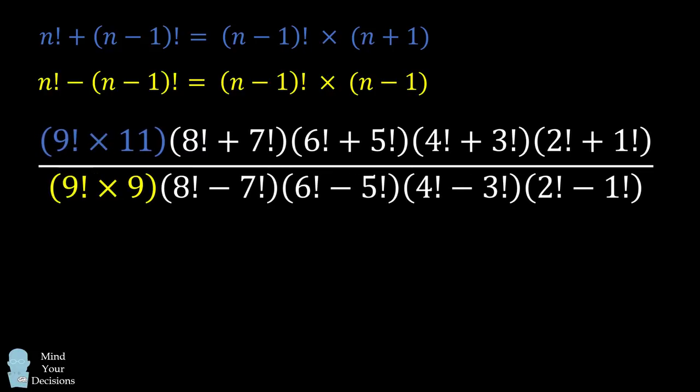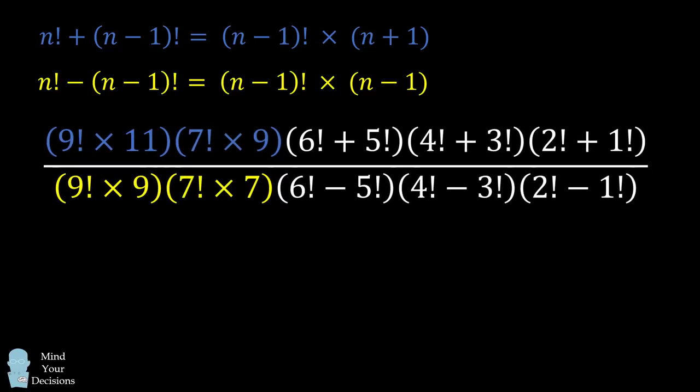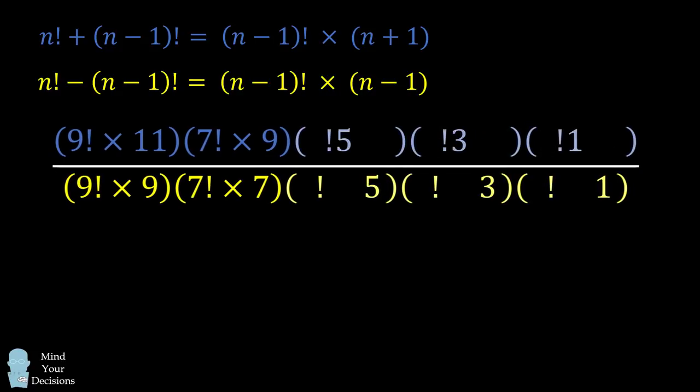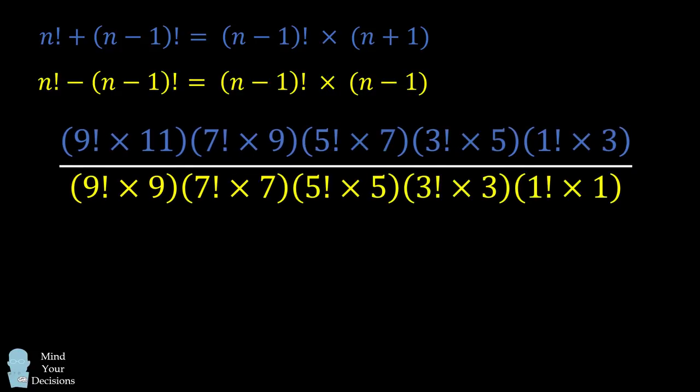The numerator becomes 9 factorial times 11, and the denominator becomes 9 factorial times 9. We can simplify the next term in this fraction similarly. We end up with the numerator being 7 factorial times 9 and the denominator being 7 factorial times 7. Let's use these formulas and simplify all the other terms in this fraction. We end up with a series of products of factorials and odd numbers.